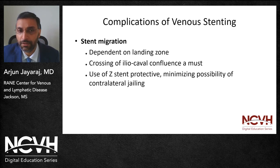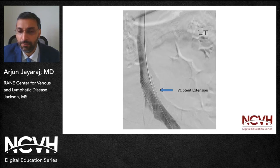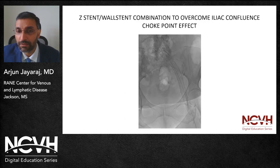Stent migration can occur and is dependent on the cranial landing zone. It is extremely important to cross the iliocaval confluence, and use of a z-stent can be protective against this phenomenon. This is an example of distal migration of a wall stent. Distal migration can be prevented by extending the wall stent all the way to the contralateral caval wall if you have access only to wall stents, or by using the composite wall and z-stent configuration. With new dedicated stents, a couple of millimeters across the iliocaval confluence should be adequate.